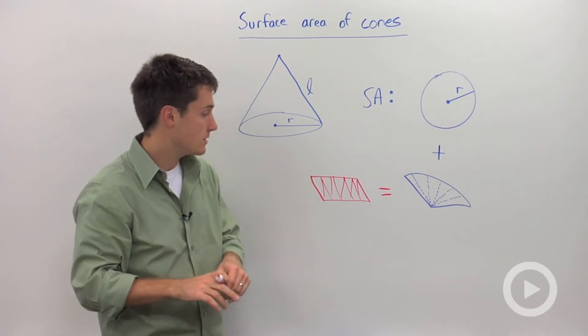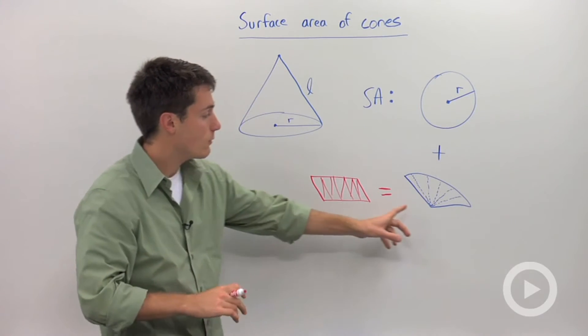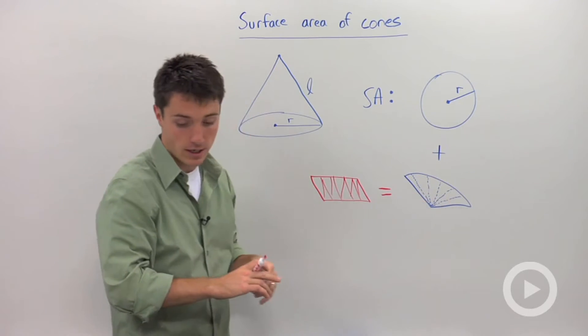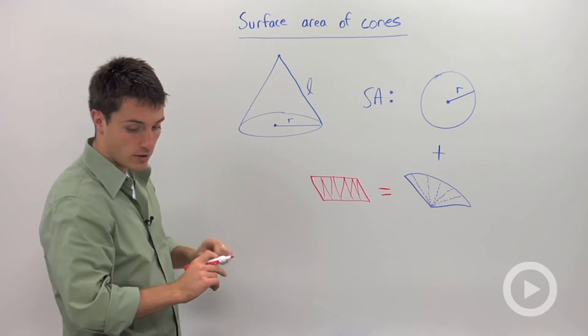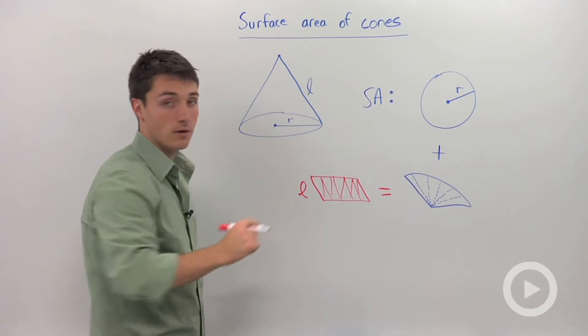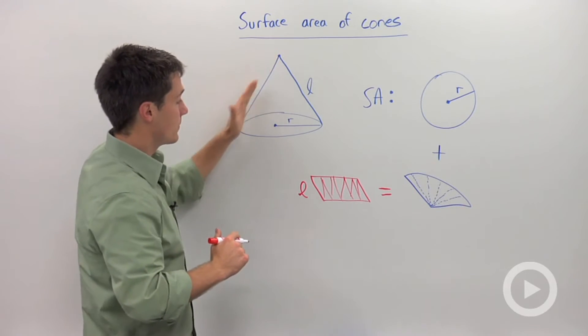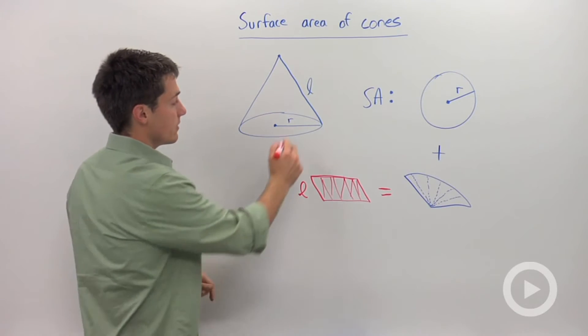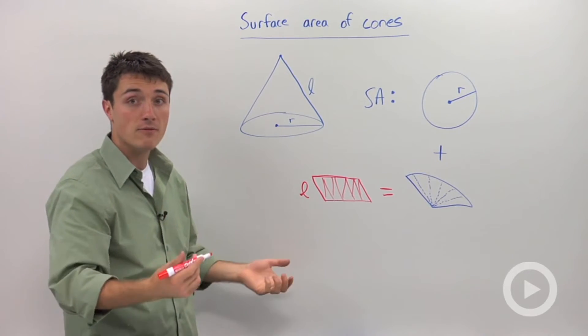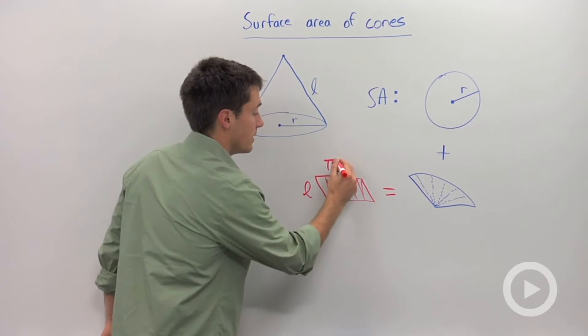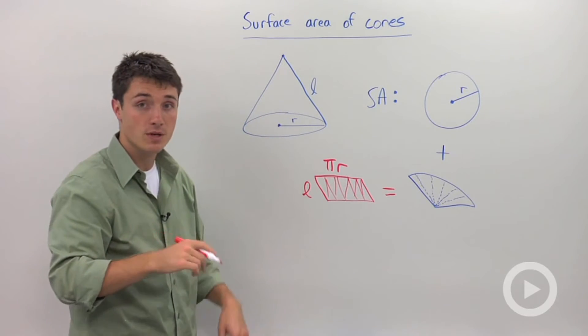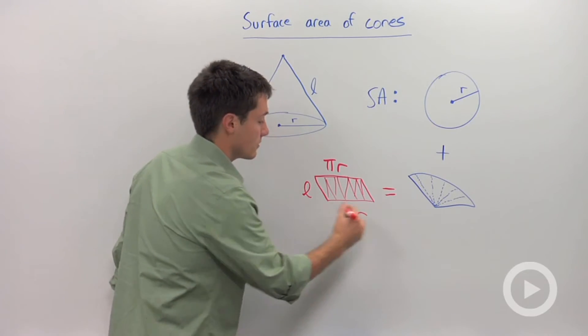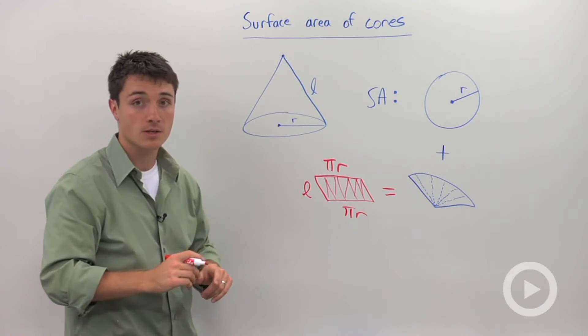And the way that we would calculate its area is first by saying, well, what are these lines that are going out? Well, those lines are going to be your L, your slant height. And this side right here is going to be half of your circumference. And half of a circumference is pi times R because the whole circumference is 2 pi R. So this down here is also pi times R.